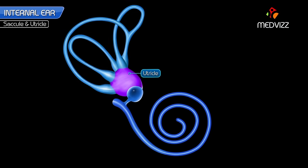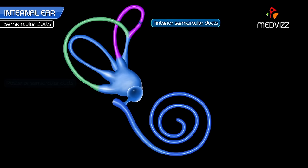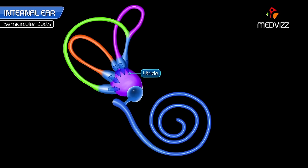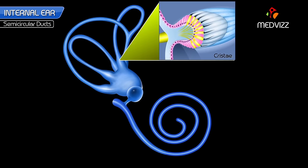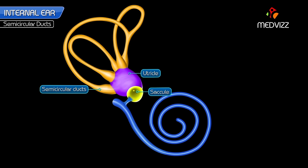The utricle receives the three semicircular ducts posteriorly through five openings. The three semicircular ducts — anterior, posterior, and lateral — lie within their respective semicircular canals and open into the utricle by five openings. Each duct has one dilated end called the ampulla. The ampullary end of each duct has a raised crest, the crista ampullaris, which projects into its lumen. The peripheral receptors in the saccule, utricle, and semicircular ducts are as follows.